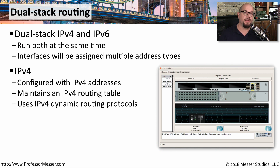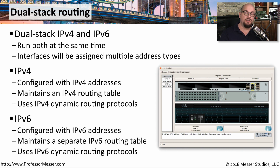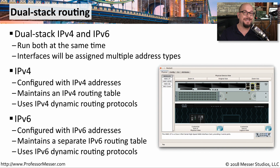And if you were configuring this on a router, you may be using dynamic routing protocols, and those dynamic routing protocols would be specific to IPv4. On that same device, we'd have a separate configuration area for IPv6. That would allow us to configure the IPv6 addresses and subnet masks, configure all the IPv6 DNS information and other details. We'd have a separate routing table specific to IPv6, and if configured on a router, you'd use dynamic routing protocols that specifically knew how to transfer IPv6 network information.